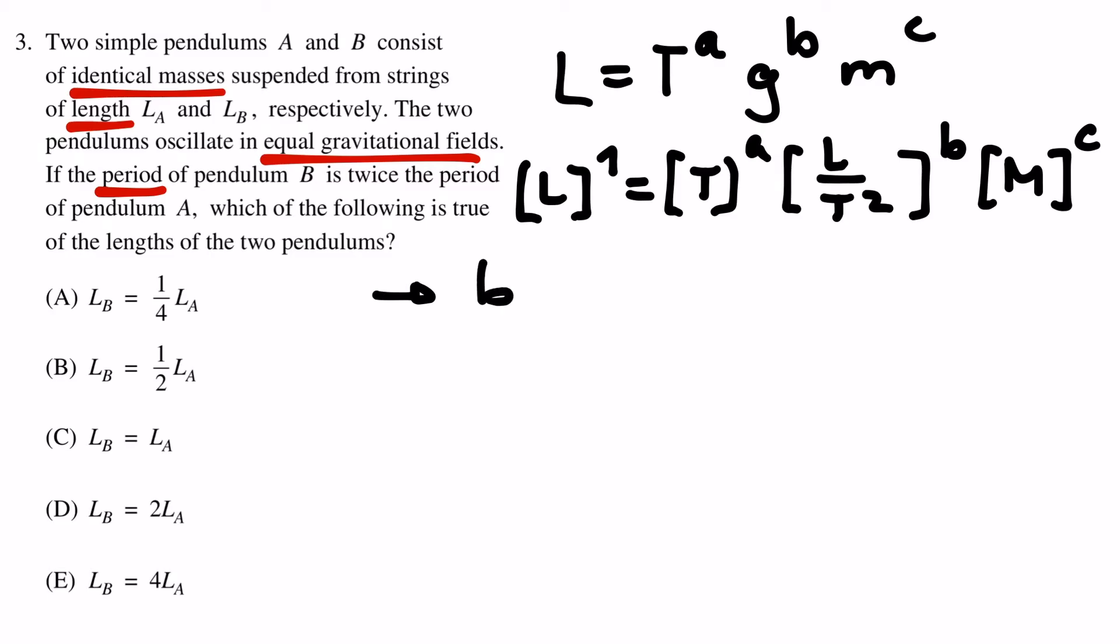If we look at length, we see that b has to be 1. And if b is 1, then a has to be 2. And for mass, c has to be 0, since it's the only mass in this equation.